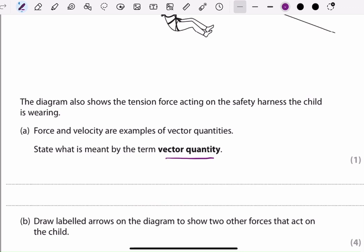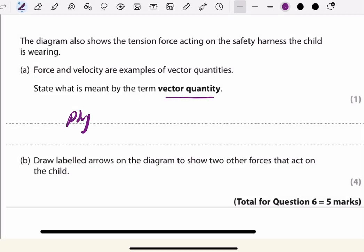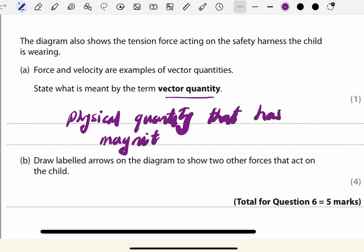So the correct answer for section A, the vector quantity, you have to say it is a physical quantity that has magnitude and direction. So you get one mark.